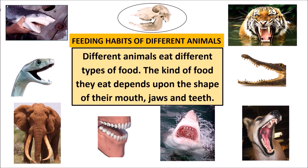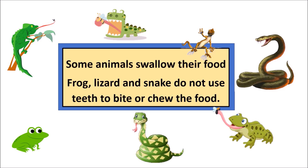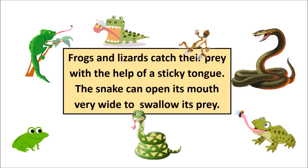Different animals eat different types of food, but why? The kind of food they eat depends upon the shape of their mouth, jaws, and teeth. Some animals swallow their food. Frog, lizard, and snake do not use teeth to bite or chew; frog and lizard catch their prey with the help of a sticky tongue.